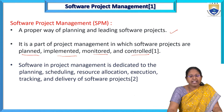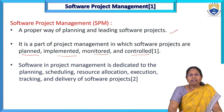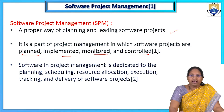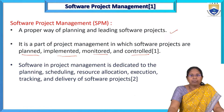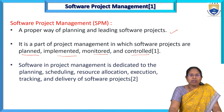Software project management is dedicated to planning, scheduling, resource allocation, execution tracking, and delivery of software projects. It focuses on how project plans are made before starting, the schedule and time required, how many people are needed, what software is required, tracking progress, and finally, delivering the product.